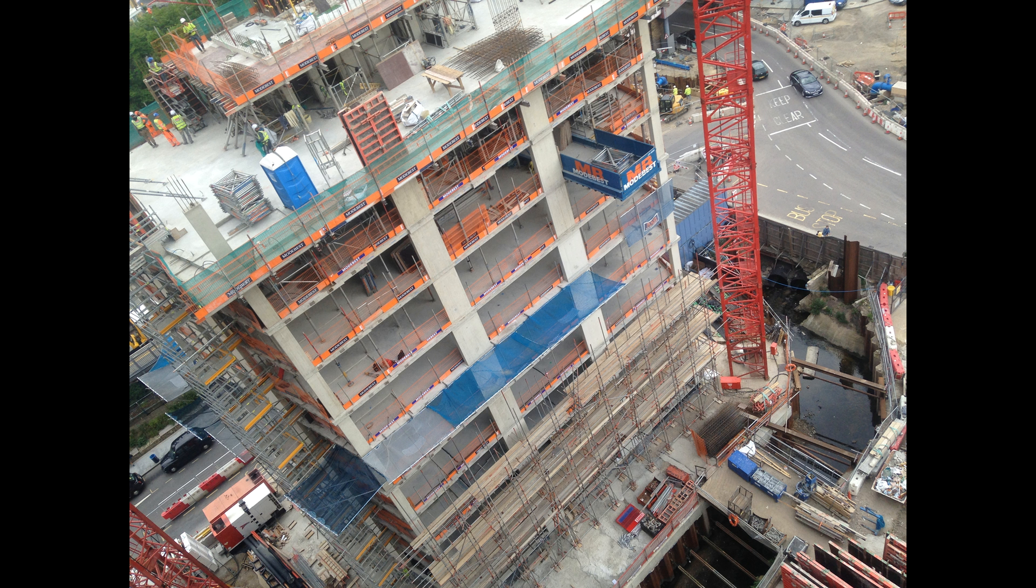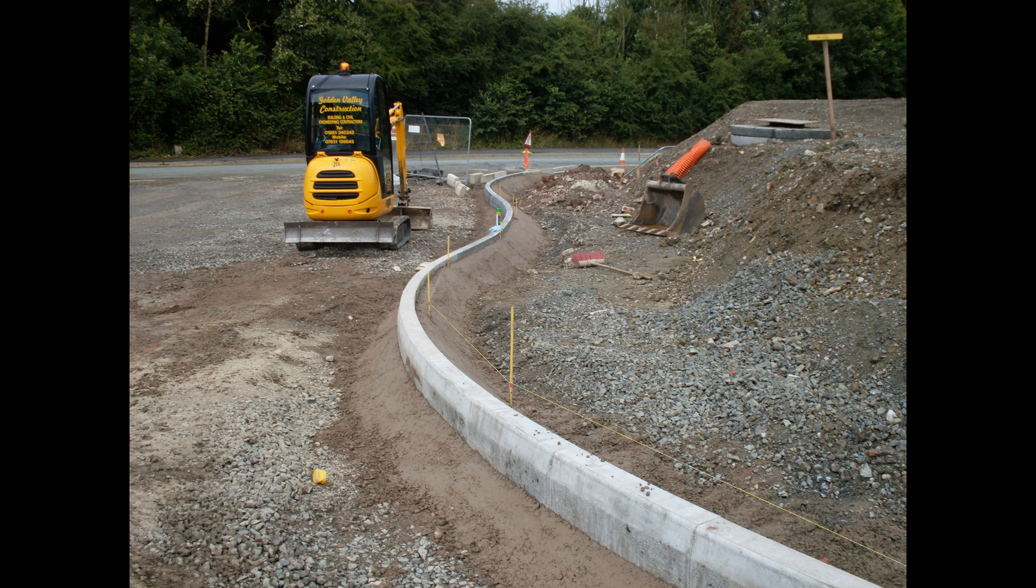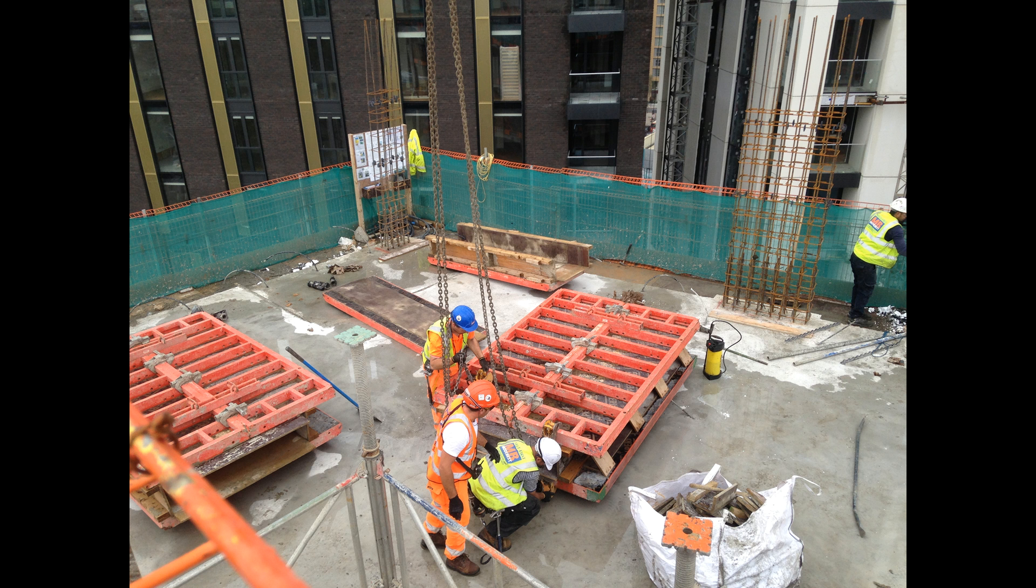Setting out is used to mark a point of interest that we already have coordinates to. The point of interest could be anything from columns, slab edges, or road curtains. Setting out is a very important element of construction projects as it serves to ensure that the structures and elements being built are to the necessary requirements and tolerances.